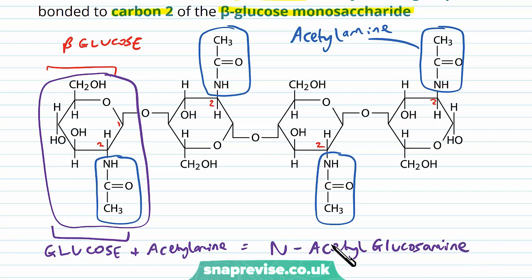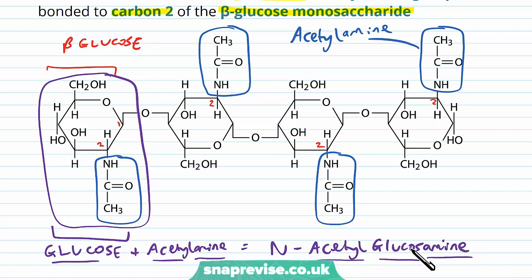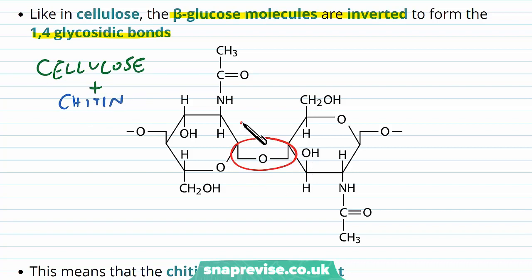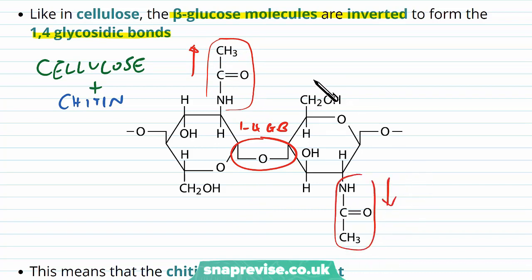N-acetylglucosamine seems like a long word but when you break it down it makes sense: we've got the acetylamine and the glucose rearranged — acetylamine at either end of the word, glucose in the middle, and the N refers to a nitrogen-bound glucosamine. Just as in cellulose, each of those beta glucose molecules is inverted — to form these 1,4 glycosidic bonds, each glucose has to be turned upside down from the previous one. So the acetylamine group faces upwards for one glucose and downwards for the next, alternating up and down each time.